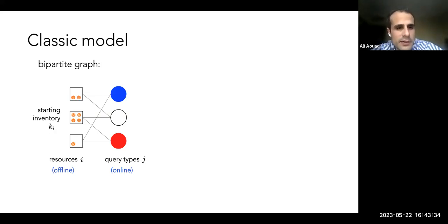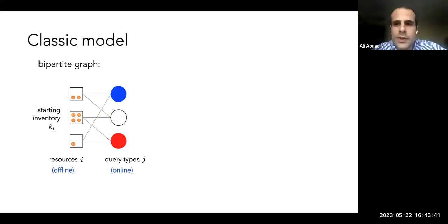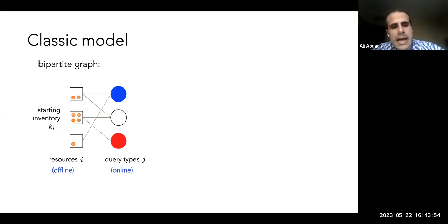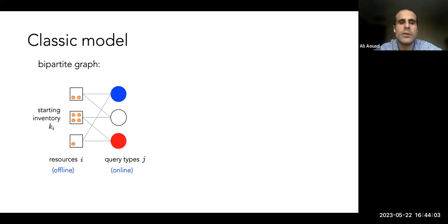On the other side of the graph are consumers — the crux of the problem is that consumers are initially unknown and arrive online. How we model these online consumers is where we find different sorts of models in the literature. There are types of consumers and an associated reward R_IJ for matching resource I with query type J, and our goal is to maximize rewards.